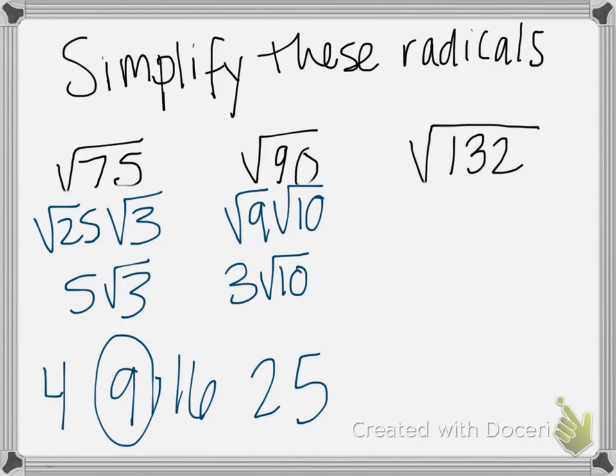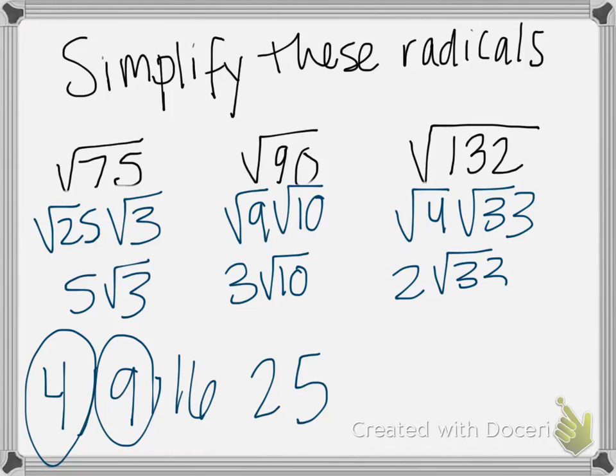132, it's not as easy to see, but we'll start by dividing it with our smallest square, which it does go into evenly. So we'll have the square root of 4 times the square root of 33, which leaves us with 2 square roots of 33. This can't be simplified any farther because it has no perfect squares that can be divided evenly into it. So this is our final answer.